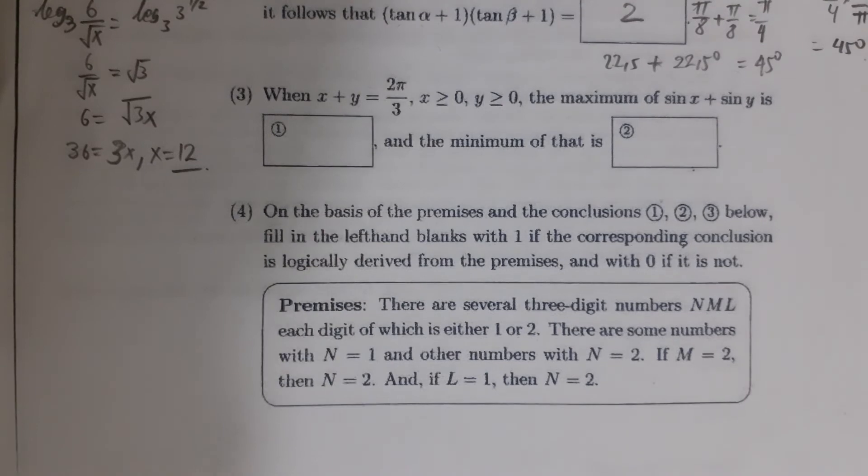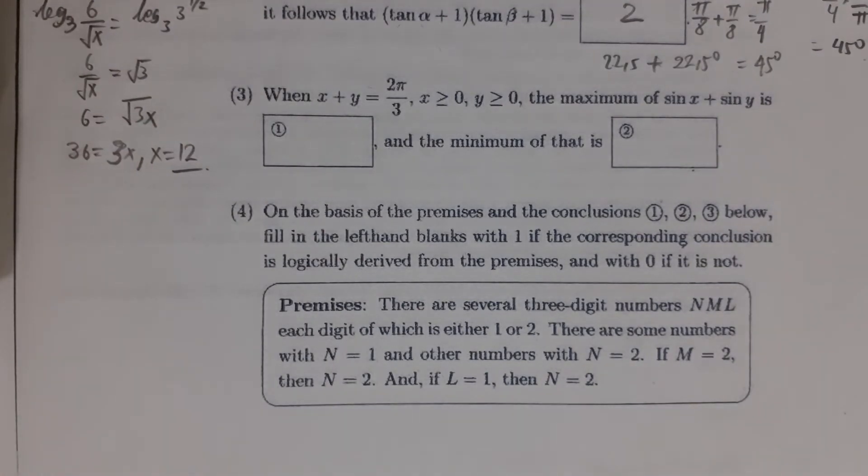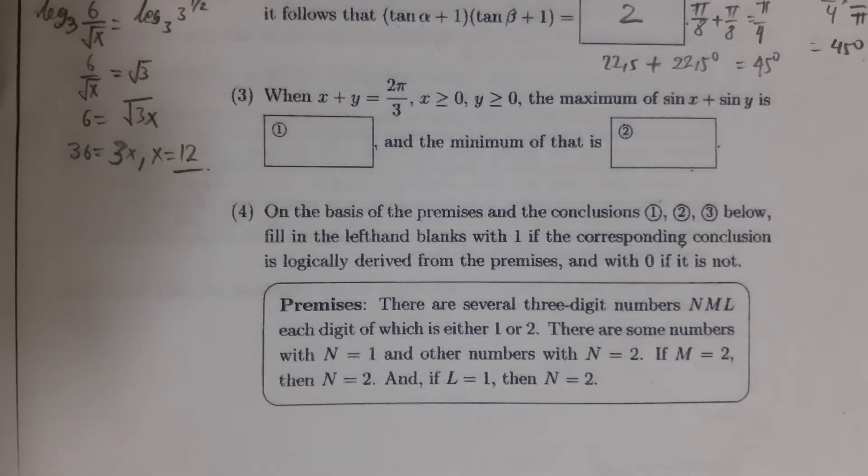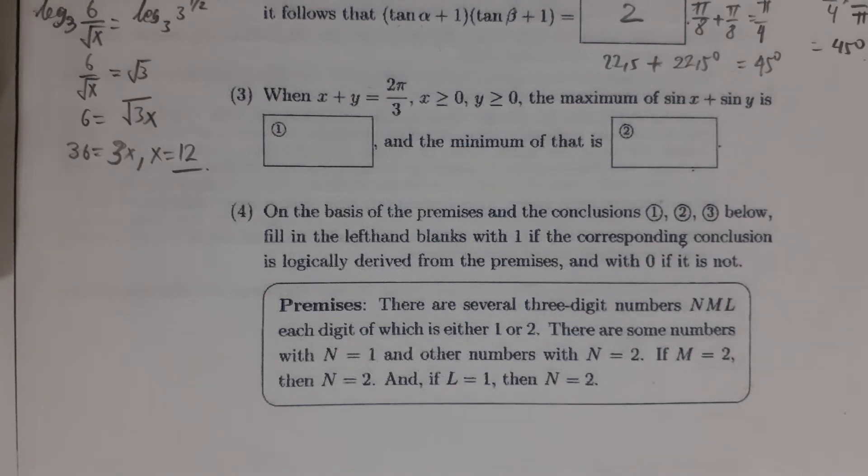But if you want to try different values one by one, for example π/4 or another angle, just make sure that x + y = 2π/3. Then you can compare the results to determine the maximum and minimum values.